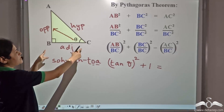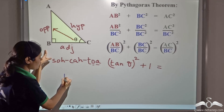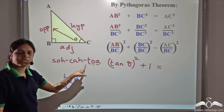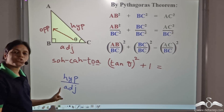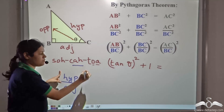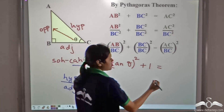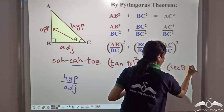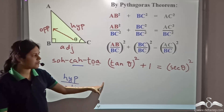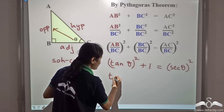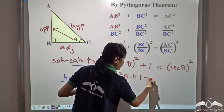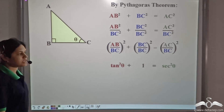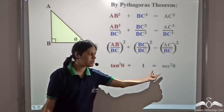AC is the hypotenuse and BC is the adjacent side. So, we have hypotenuse by adjacent. Now, adjacent by hypotenuse is cos. So, hypotenuse by adjacent will be the reciprocal of cos. The reciprocal of cos is sec. So, this is equal to (sec θ)². So, tan²θ plus 1 equals sec²θ. This is an identity because it is derived from the Pythagoras theorem and holds true for all values of theta between 0 to 90 degrees. We have 1 plus tan²θ equal to sec²θ.